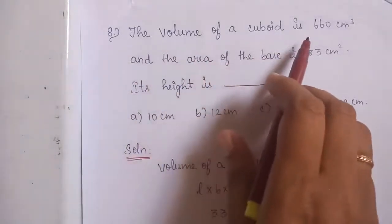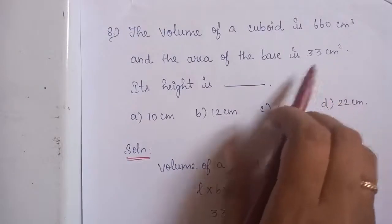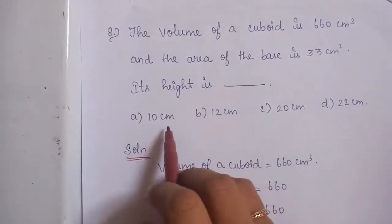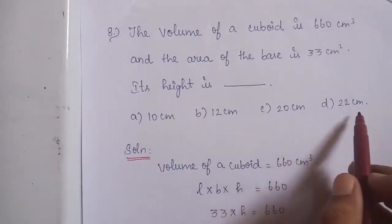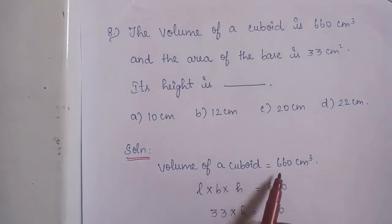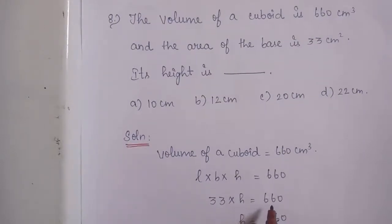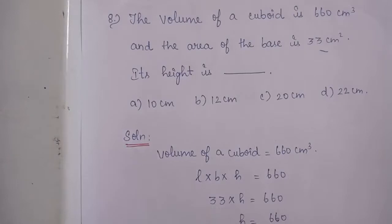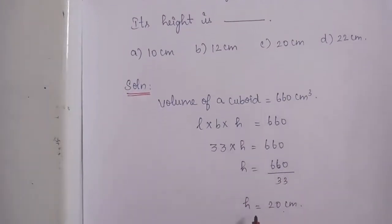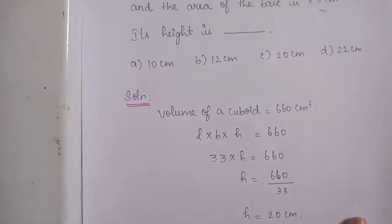Question No. 8: The volume of a cuboid is 660 cm cube and the area of the base is 33 cm square. Its height is dash. Option A: 10 cm. Option B: 12 cm. Option C: 20 cm. Option D: 22 cm. Solution: Length × breadth × height equals 660 cm cube. Since base area (length × breadth) is 33, so 33 × H equals 660, giving H equals 20 cm. The correct answer is Option C: 20 cm.